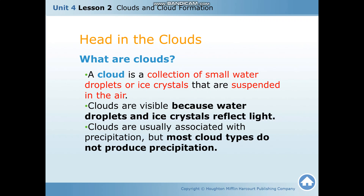What are clouds? A cloud is a collection of small water droplets or ice crystals that are suspended in the air. Clouds are visible because water droplets and ice crystals reflect light. Clouds are usually associated with precipitation, but most cloud types do not produce precipitation.